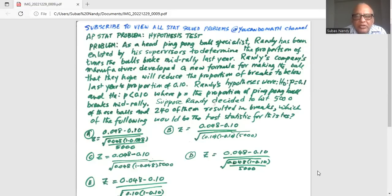Randy's hypotheses are null hypothesis H0: P = 0.1 and alternate HA: P < 0.1, where P is the proportion of ping pong balls that break mid-rally. Suppose Randy decides to hit 5000 of these balls and 240 of them resulted in breaks. Which of the following would be the test statistic for this test? They have five options.